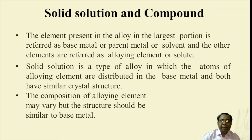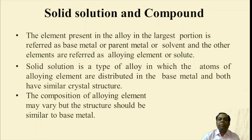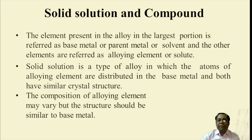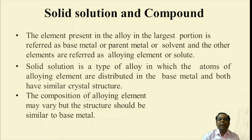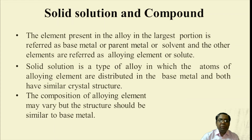There is a thin line between solid solution and compound. The element present in the alloy in the large portion is referred to as base metal, parent metal, or solvent, and the other elements are referred to as alloying elements or solute. Solid solution is a type of alloy in which the atoms of the alloying element are distributed in the base metal, and both have a similar crystal structure.